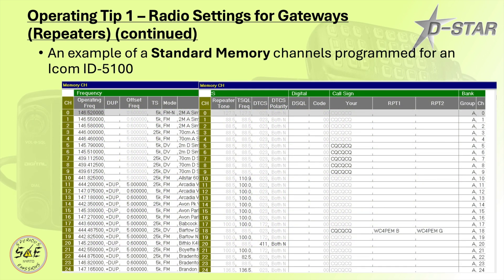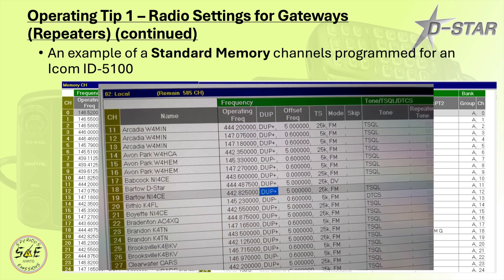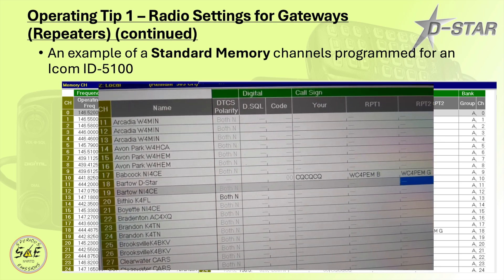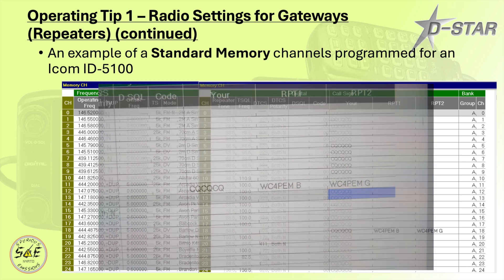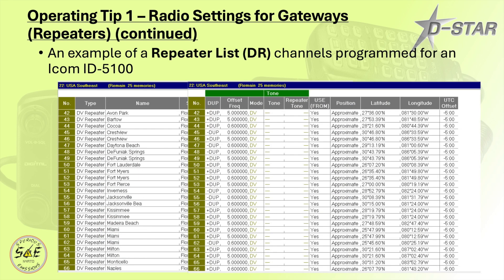Here's an example of standard memory channels that have been programmed for an ID5100. On the left side in the programming lines for each channel you'll find your standard typical frequency, duplex, and which mode it is — FM or DV. But on the right hand side are some of the most important pieces of information, specifically if you're programming a standard memory channel for your local DSTAR gateway or repeater.